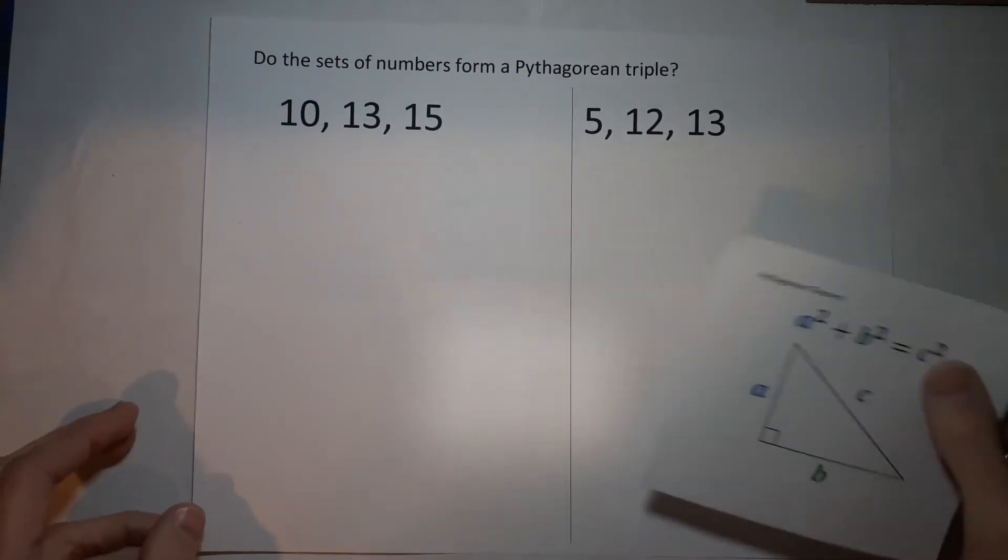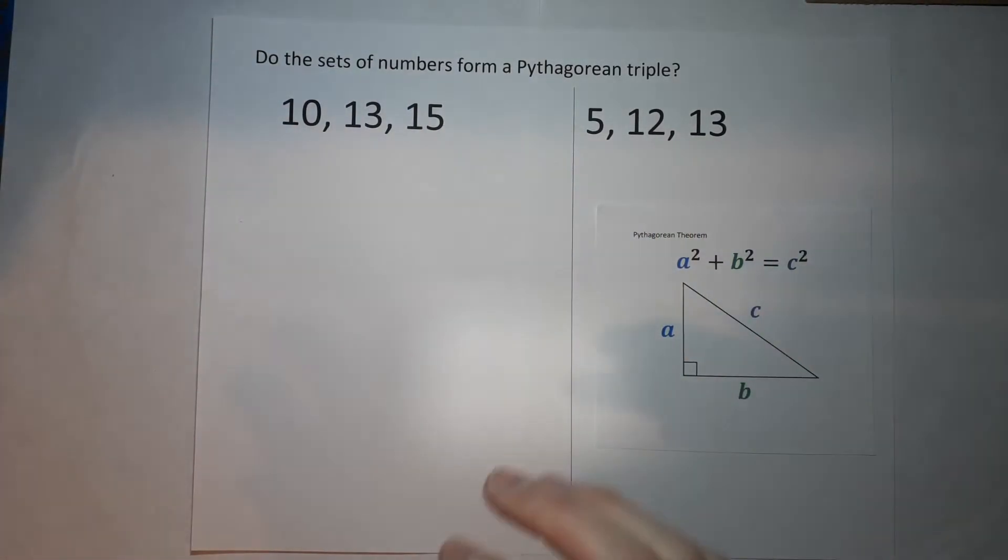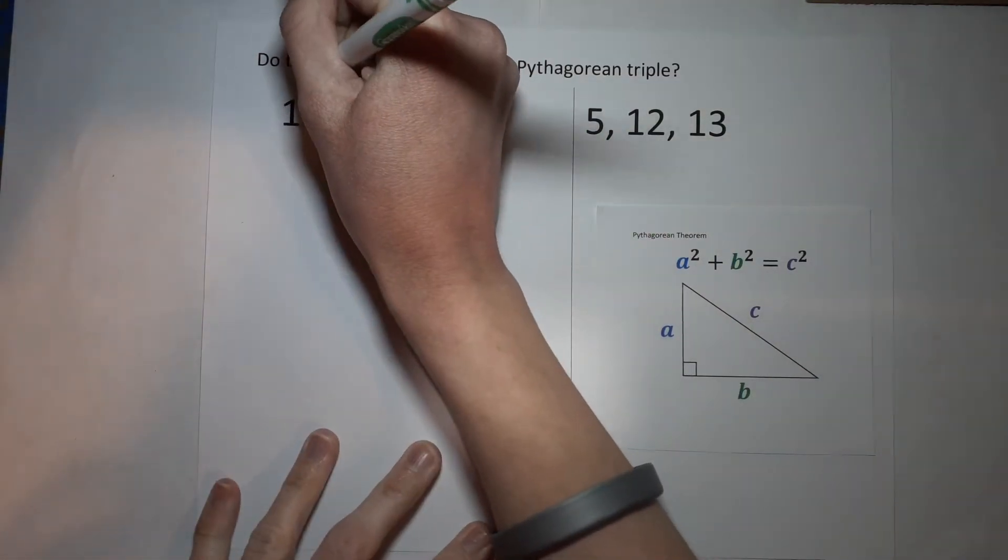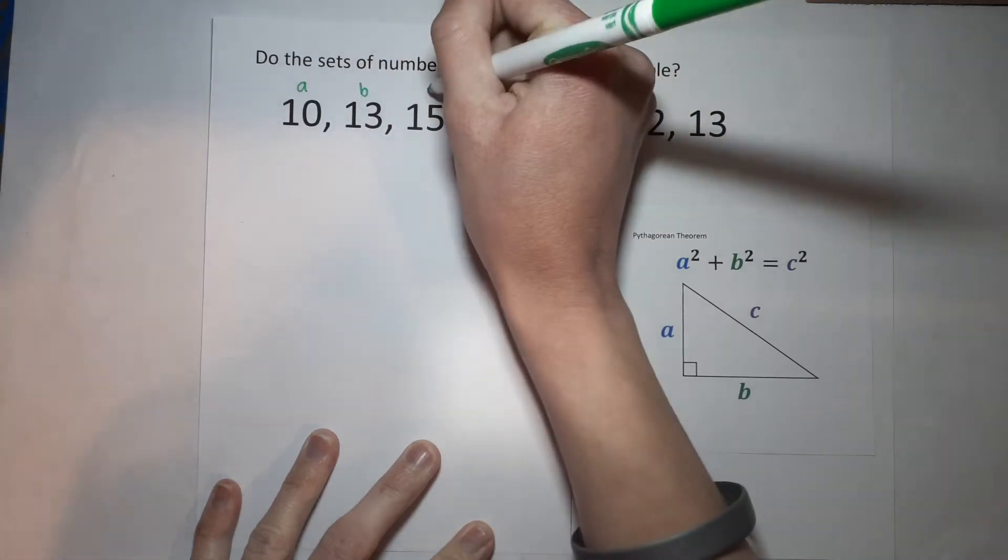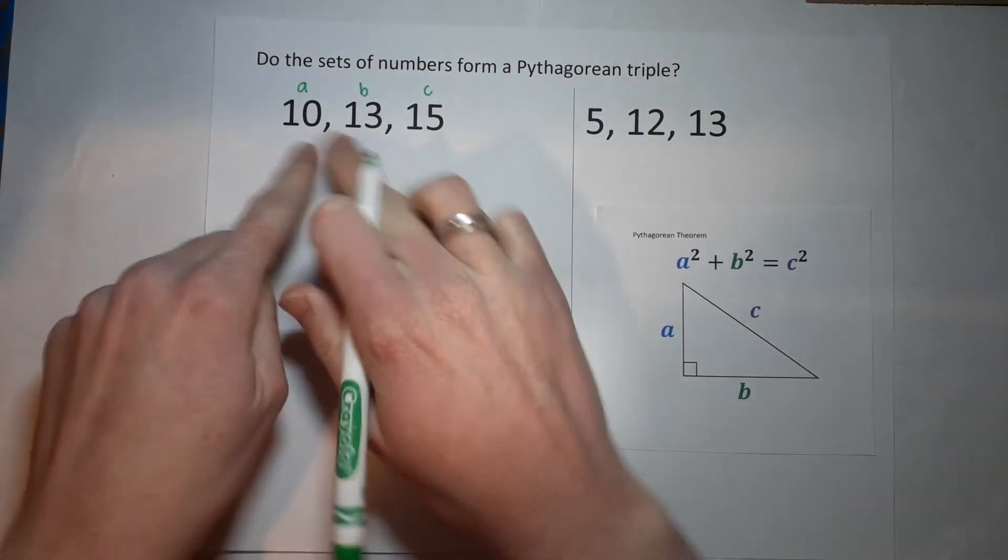So here we go: 10, 13, and 15. I'm going to label these as my a and b, and we know this one is c because it's the biggest. a and b could be swapped, it doesn't really matter.